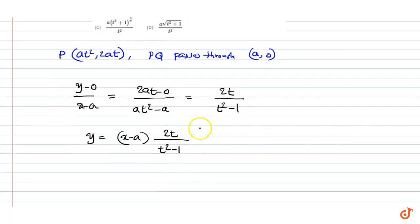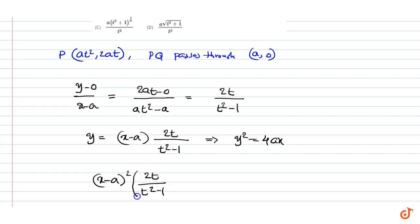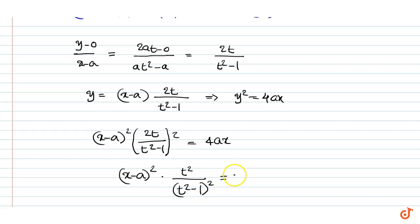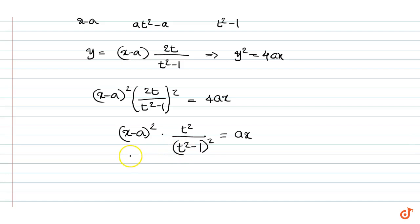Since this equation satisfies y² = 4ax, we can write (x - a)² · [2t / (t² - 1)]² = 4ax, that is (x - a)² · t² / (t² - 1)² = ax. Expanding, the product of roots of this equation gives us x₁ · x₂.